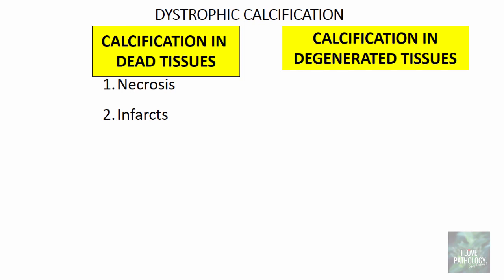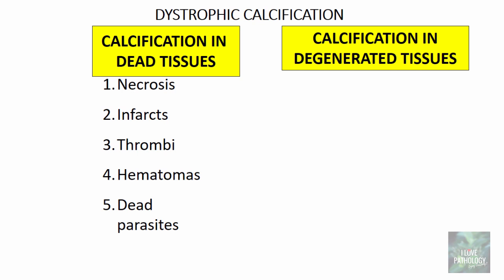Apart from necrosis, you can see dystrophic calcification in infarcts. Thrombi is another area where you can expect calcification in dead tissues, particularly in venous thrombosis. Calcium deposition can occur in venous thrombi, making them stony hard — that is when venous thrombi with calcification are called phleboliths. You can also find calcification in hematomas and in dead parasites, particularly hydatid cysts and cysticercosis.